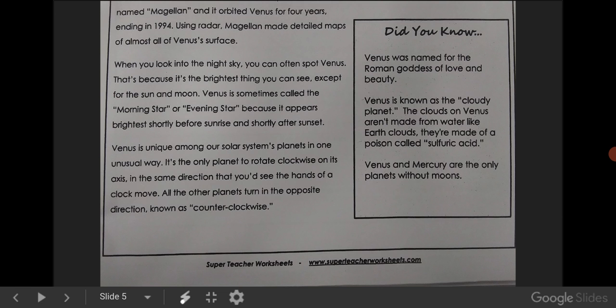Did you know? Venus was named after the Roman goddess of love and beauty. Venus is known as the Cloudy Planet. The clouds on Venus aren't made from water like Earth's clouds. They're made of a poison called sulfuric acid. Venus and Mercury are the only planets without moons.